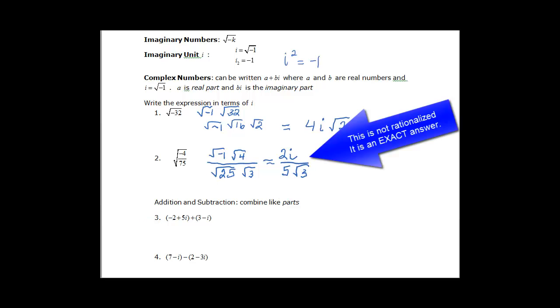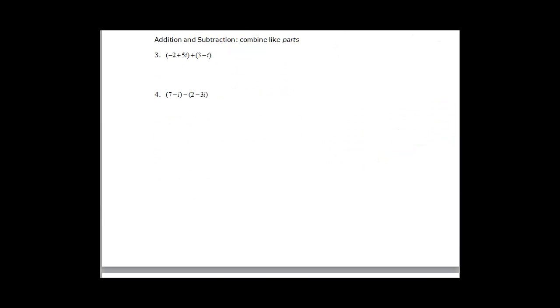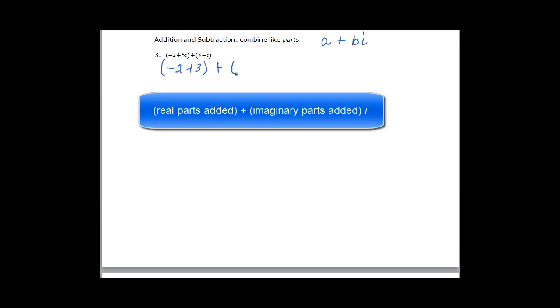The first operations we want to talk about are addition and subtraction. You basically do it like you would with any polynomials — just combine your like terms. The way I'm going to teach you is to write it in the form a plus bi, writing b in parentheses. Negative 2 plus 3 are the real parts, plus 5 plus negative 1 gives us 4 times i. So negative 2 plus 3 is 1, and 5 plus negative 1 is 4i.